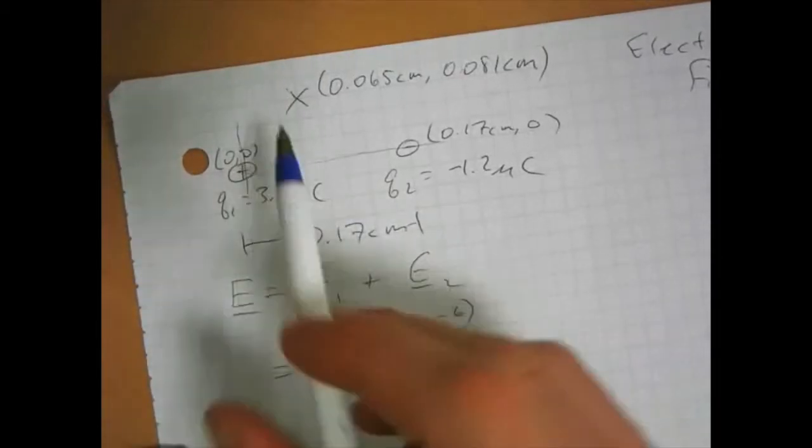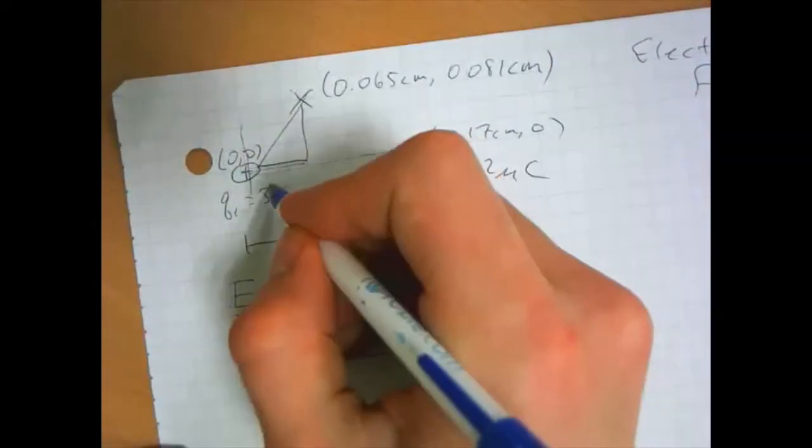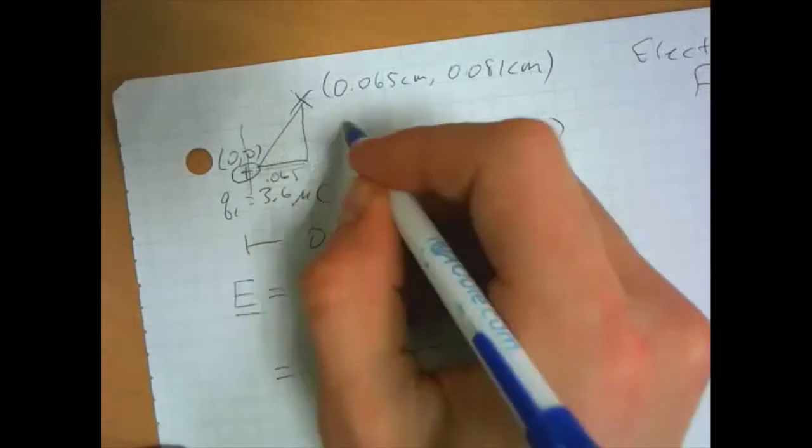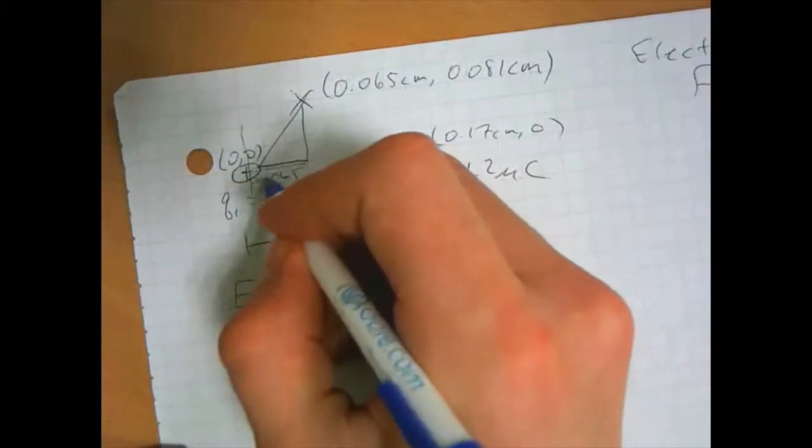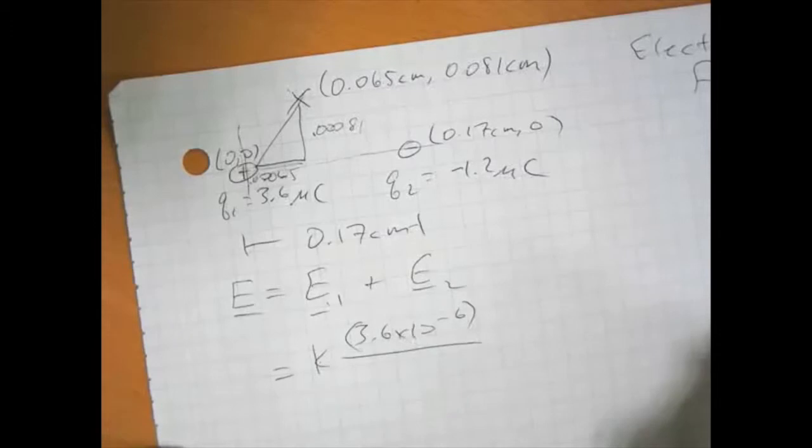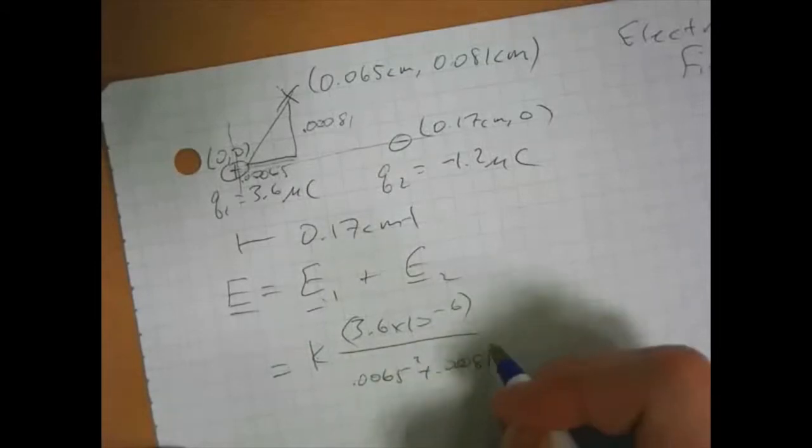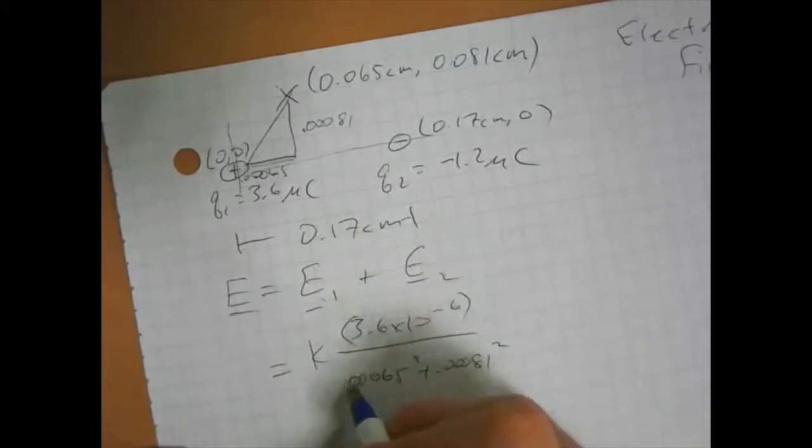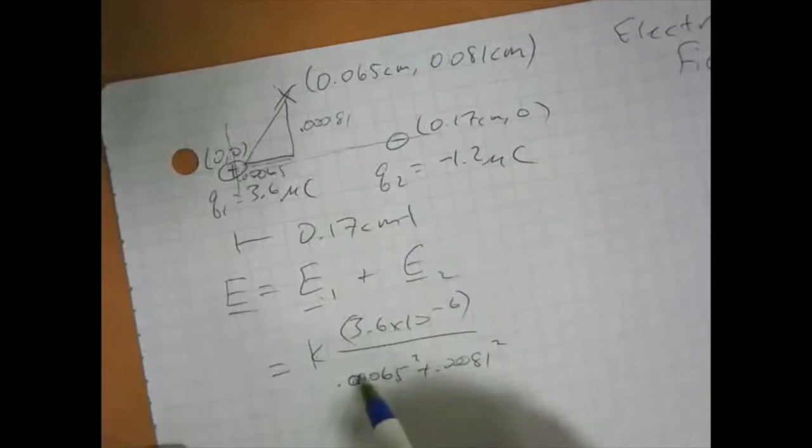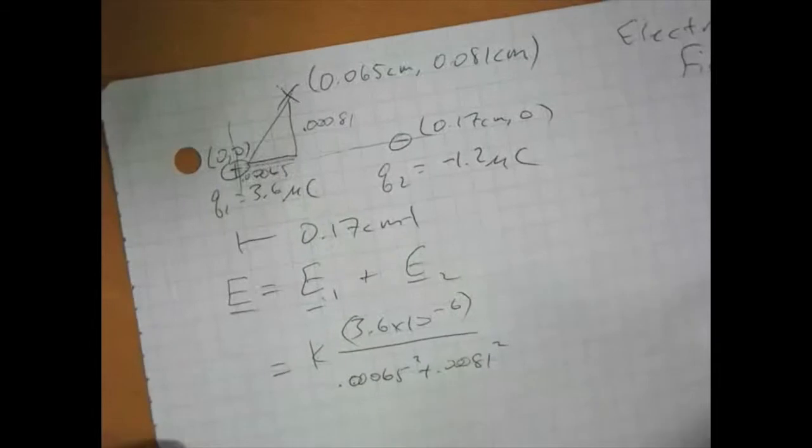Well, we can make a little triangle here, and we know this side is 0.0065, and this is 0.00081. Therefore, we can say that this is 0.0065 squared plus 0.00081 squared. And if we square root of that, we get the hypotenuse, but this is r squared, so that's it.